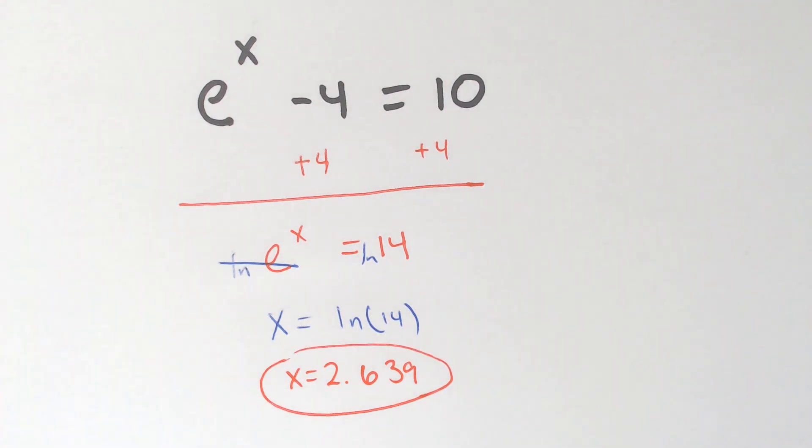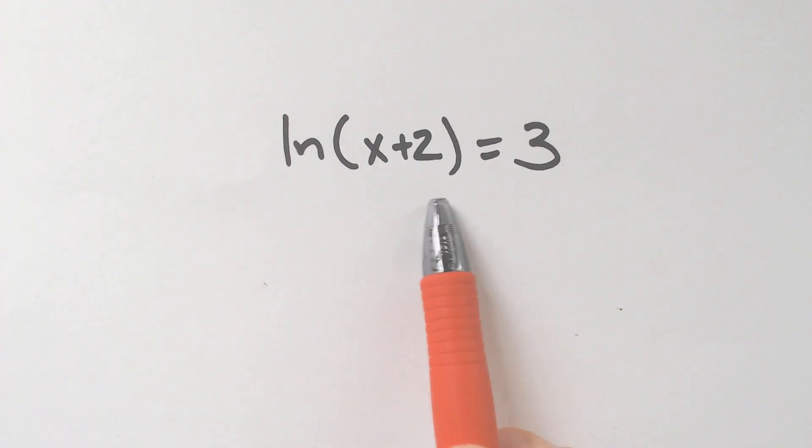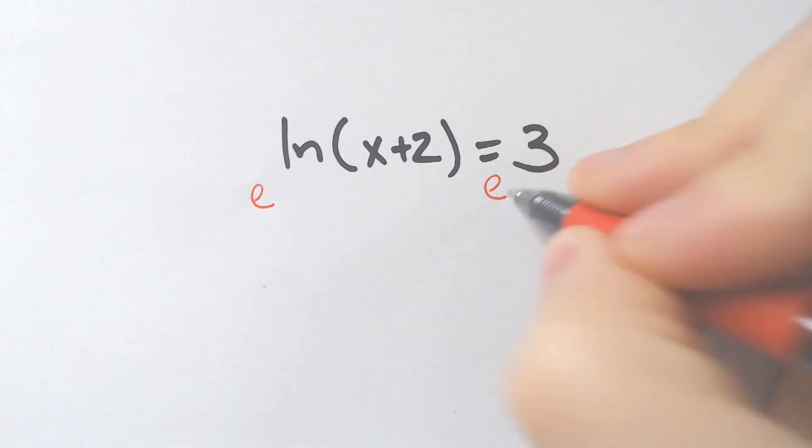Now, if you have an LN equation, it's a little different. So an LN equation, you would E both sides to get rid of. So if we had the LN of X plus 2 is equal to 3, we would have to raise that to the E power, so to speak.